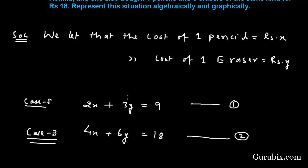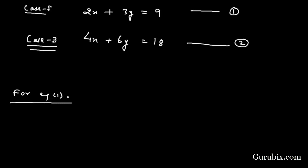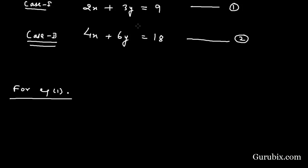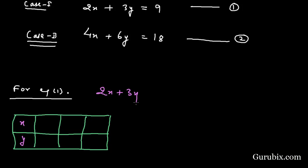Now we shall represent these two equations graphically. For that, we first draw a table for equation number one. The table contains at least two solutions of the given equation. We write X and Y values. The equation 2X + 3Y = 9 can be rewritten as Y = (9 − 2X) / 3.